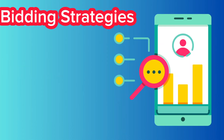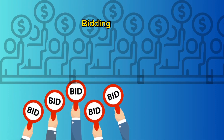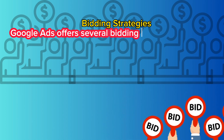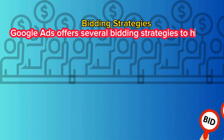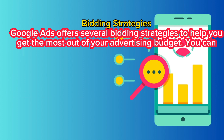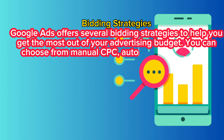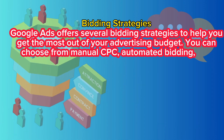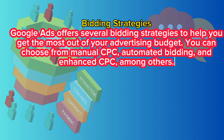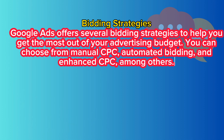Bidding strategies. Google Ads offers several bidding strategies to help you get the most out of your advertising budget. You can choose from manual CPC, automated bidding, and Enhanced CPC, among others.